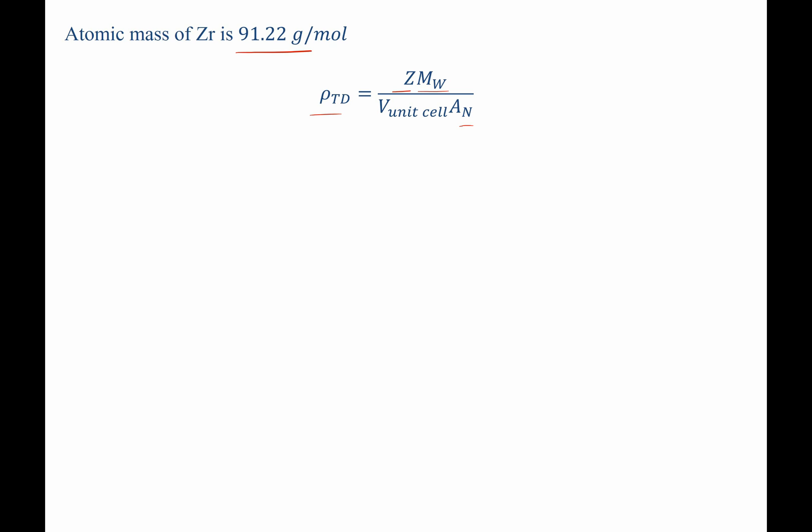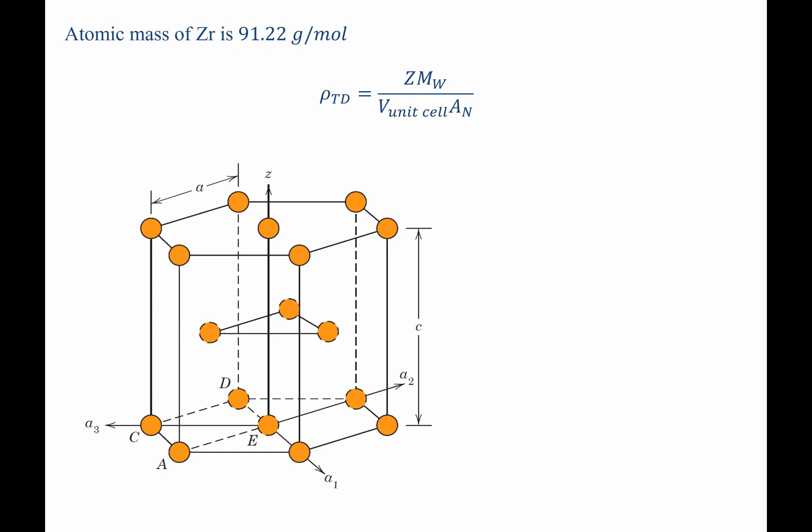Now, the book tells us that z for hexagonal close-packed is 6. Why is that? Well, if we take a drawing of the hexagonal close-packed hexagonal prism, we can count the atoms that are within this hexagonal prism.